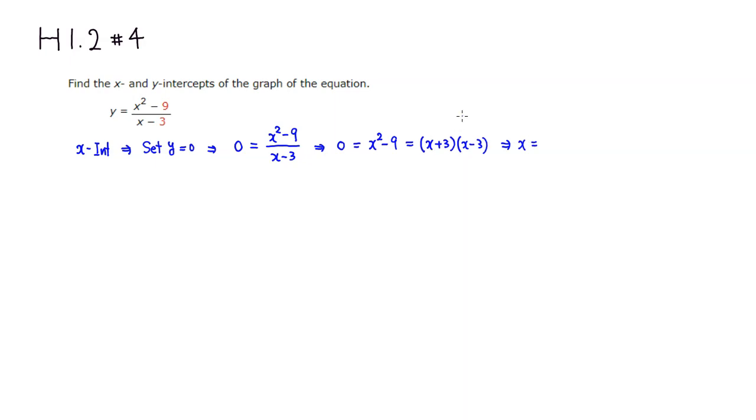So if you set this factor equal to 0, we would get negative 3. And if you set this one equal to 0, x is going to be positive 3, so the answer is plus or minus 3. So let's type it in.